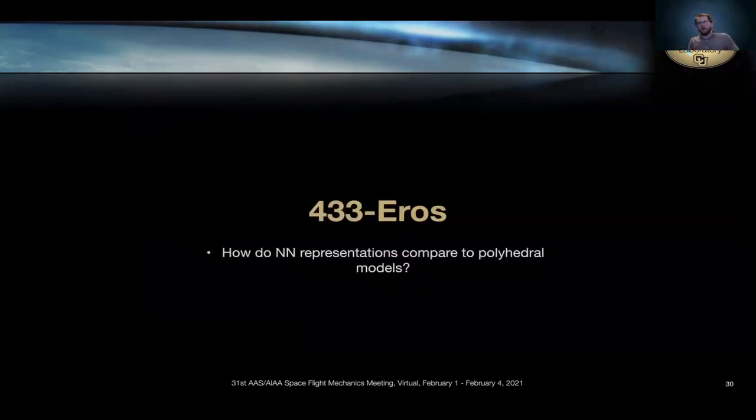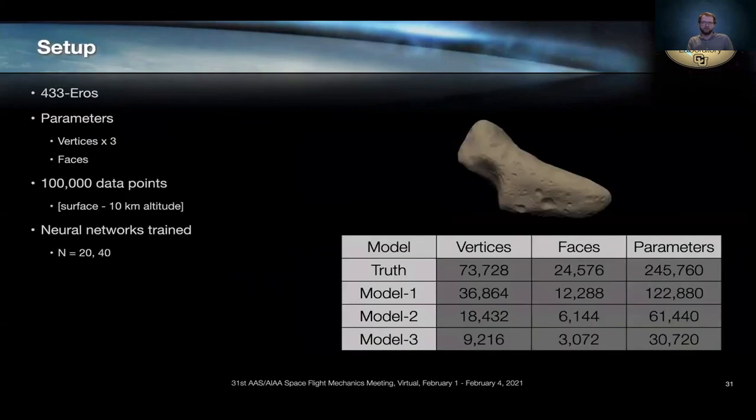So I've been poking fun at spherical harmonics this whole time. It's only fair I give it a break and move on to a different representation, which is the polyhedral gravity model. So to test the polyhedral gravity model against the neural networks, I generate four shape models of the asteroid Eros, and I generate 100,000 data points from the surface of this body to about 10 kilometers in altitude, and then I train two networks.